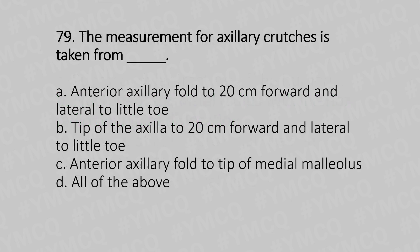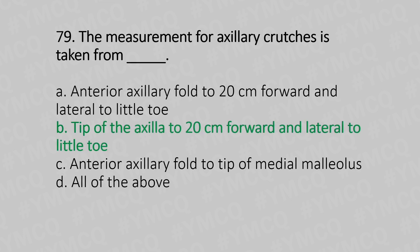Question 79: Measurement of axillary crutches is taken from — option A: anterior axillary fold, 20 cm forward and lateral to little toe; option B: tip of the axilla, 20 cm forward and lateral to little toe; option C: anterior axillary fold to tip of medial malleolus; option D: all of the above. The answer is option B: tip of the axilla, 20 cm forward and lateral to the little toe.